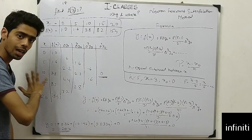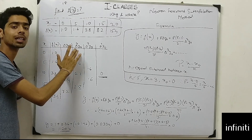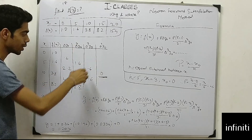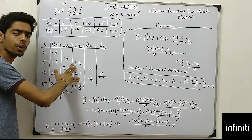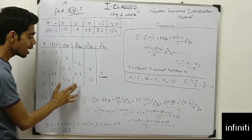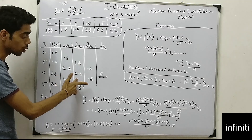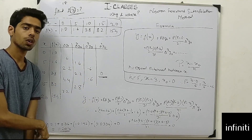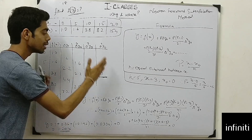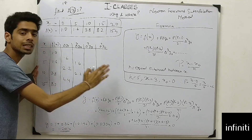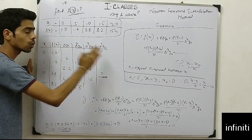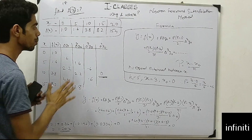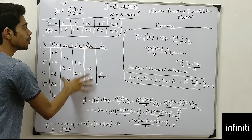For delta cubed y0: 2.2 minus 1.6 gives 0.6, and 2.8 minus 2.2 gives 0.6. For delta to the power 4 y0: subtracting these two gives 0. So I stop here — I proceed until I get a zero or a single value. The difference table is now complete.